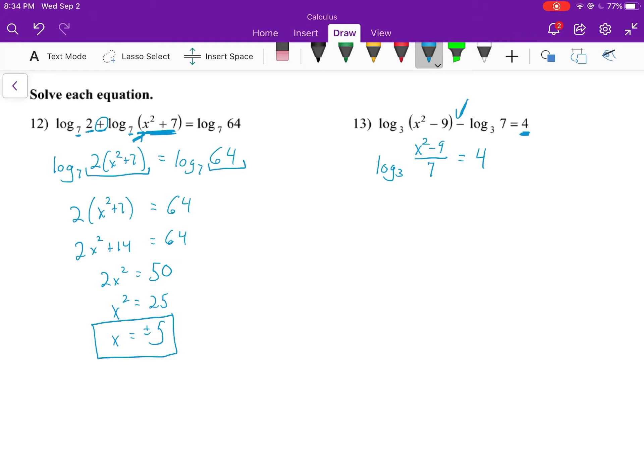Now we don't have a logarithm on both sides, so we convert to exponential form. That's 3⁴ = (x² - 9)/7. We'll finish solving this. 3⁴ is 81, which equals (x² - 9)/7.